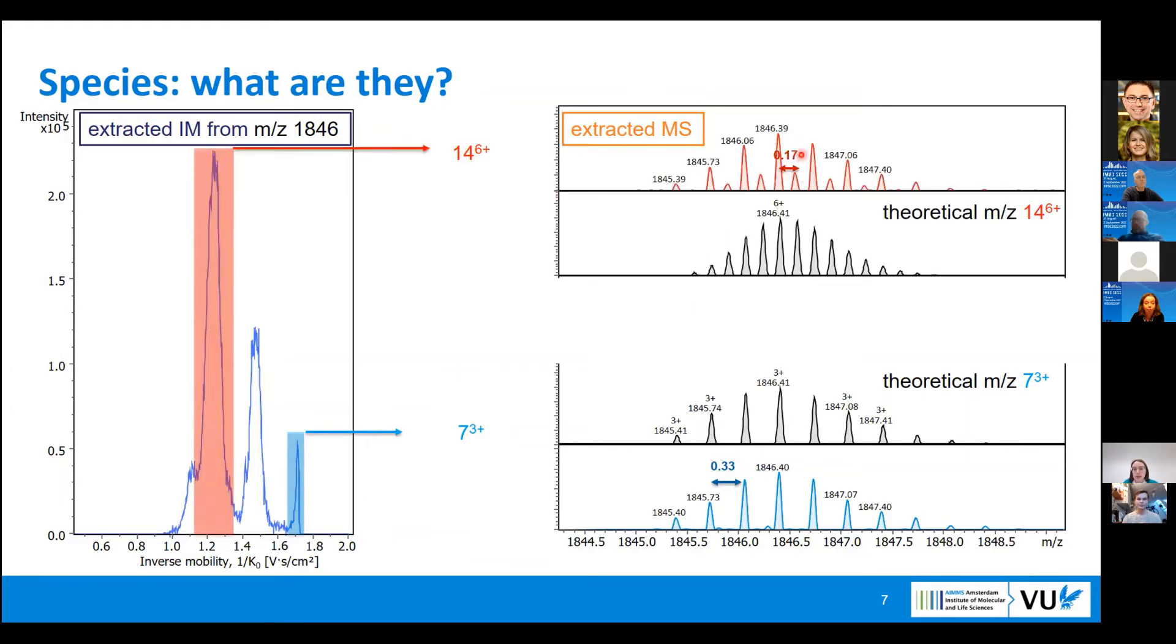The third peak, we do the same, and the distance between the peaks is 6+. So we can assign this to oligomer with 14 monomers at 6+ charge. The peak in the middle has isotopic distribution of both 6+ and 3+, and then probably both of them are present there, but they most likely have different conformations, so more extended to more compact ones.